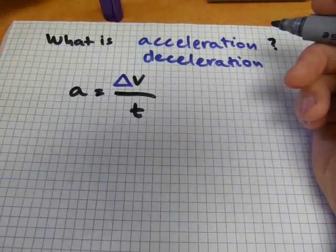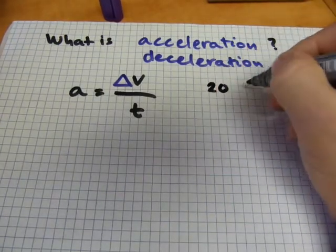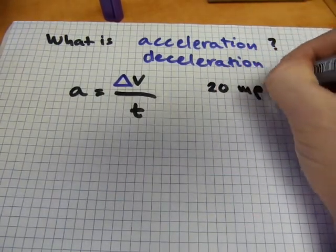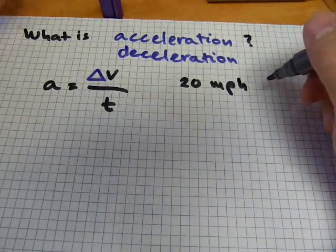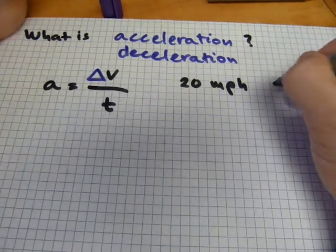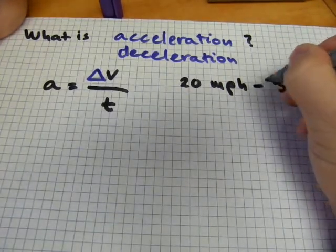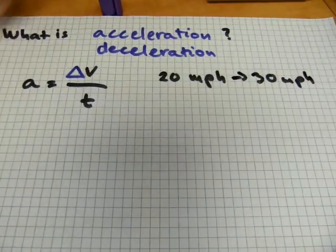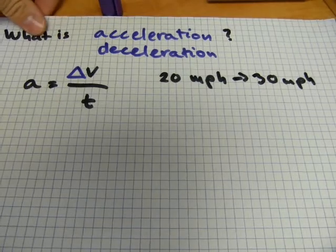Say you're cruising at 20 miles per hour and then you accelerate to 30 miles per hour. From 20 you accelerate to 30 miles per hour. In this case you accelerated, you're going faster.